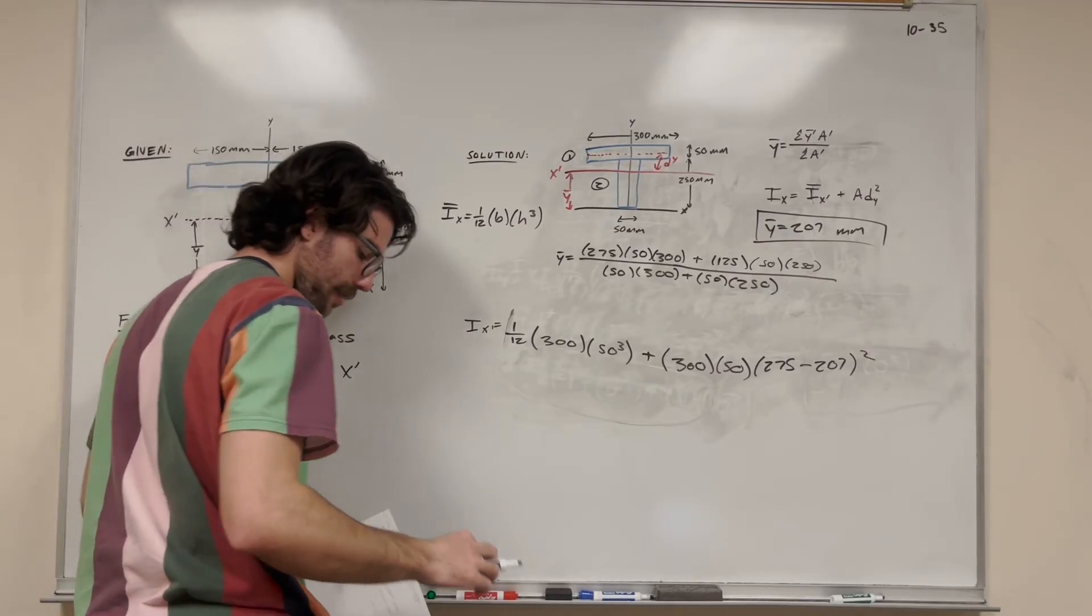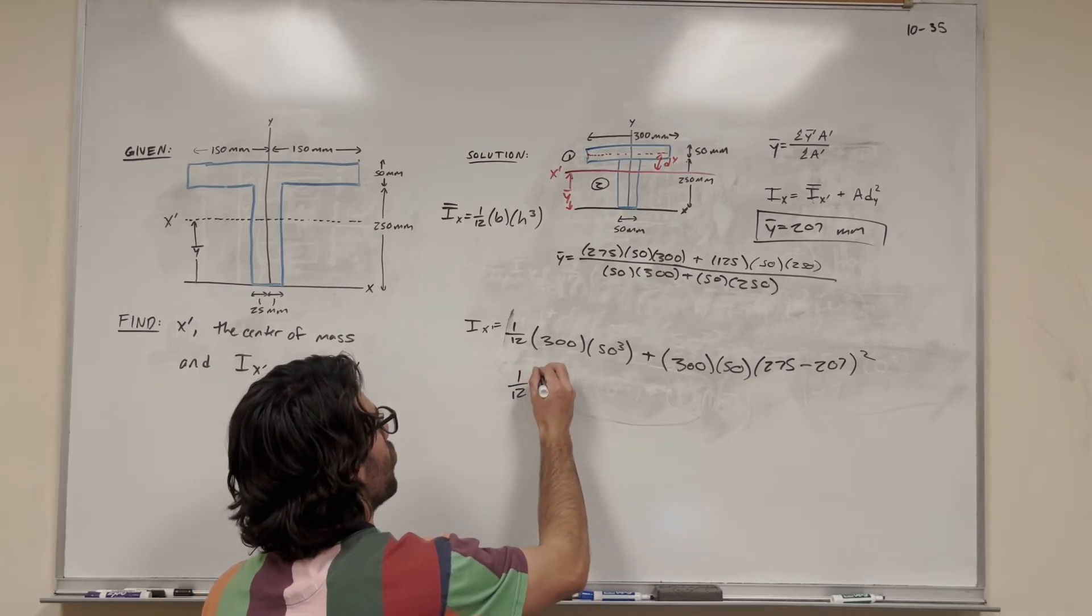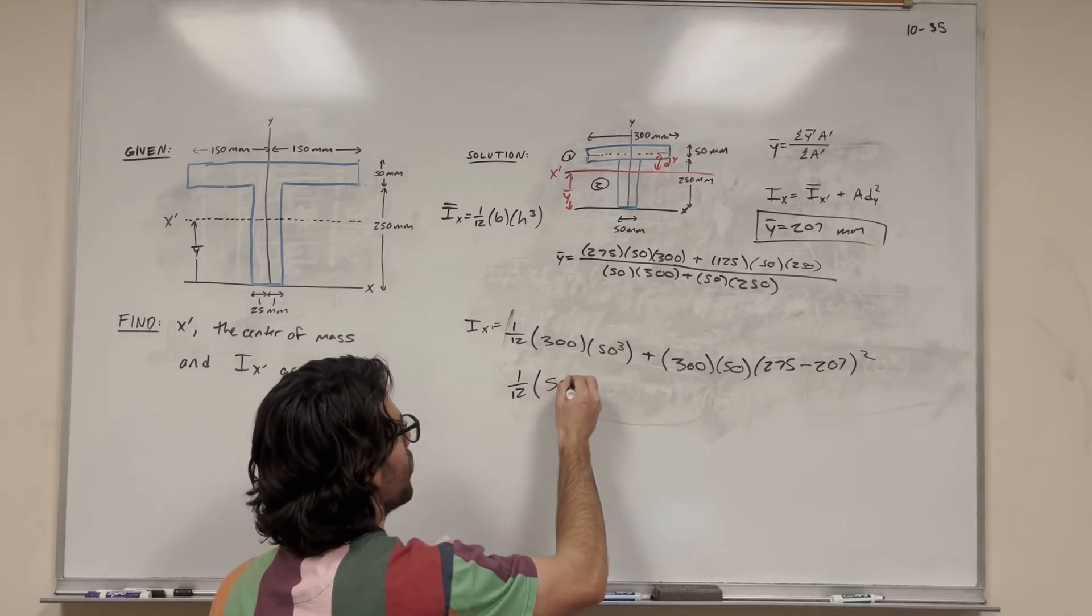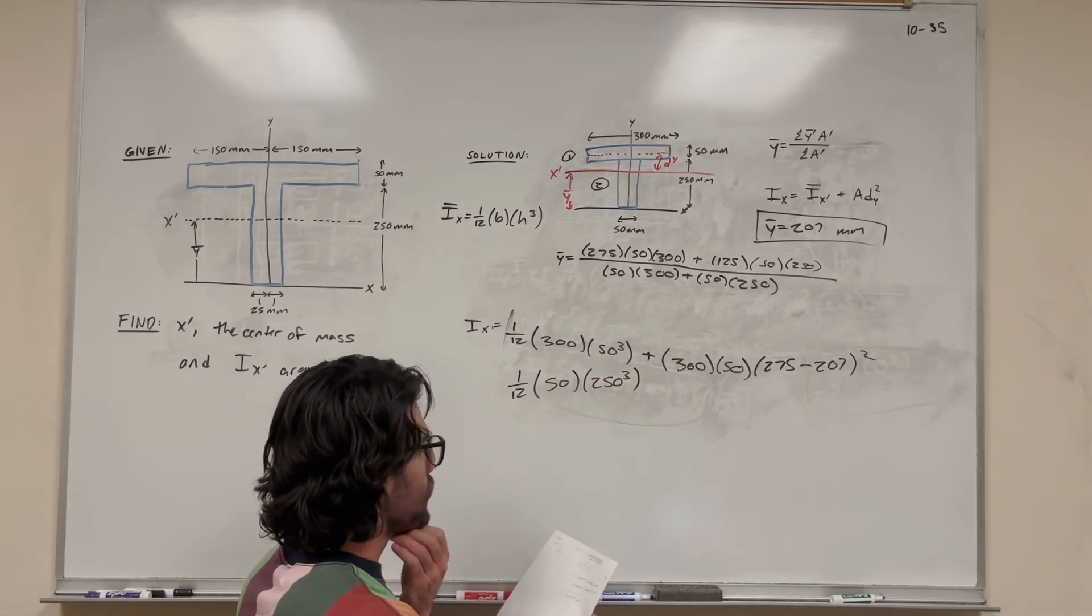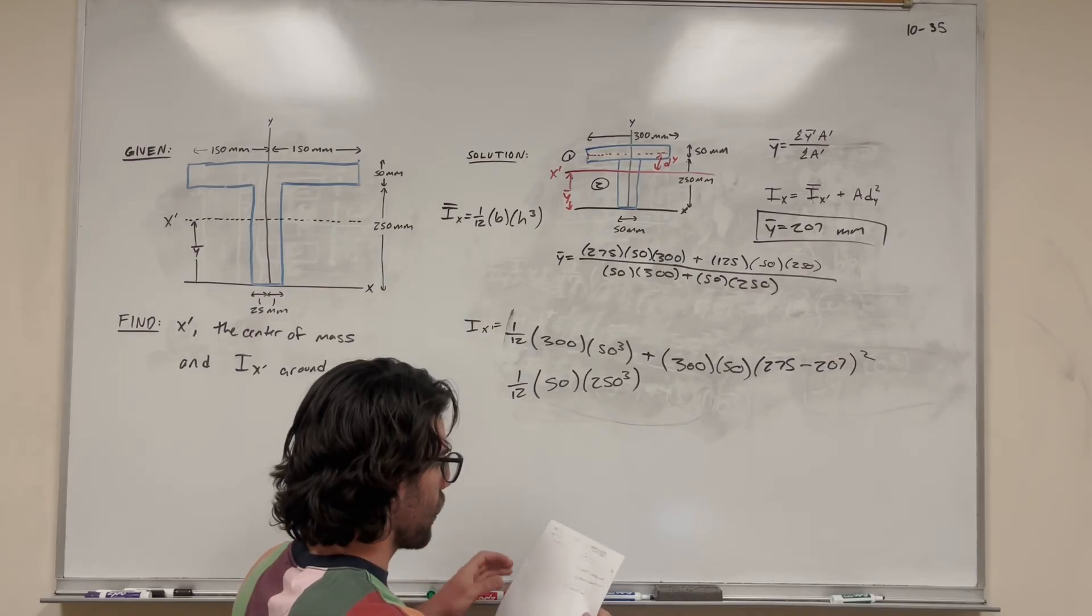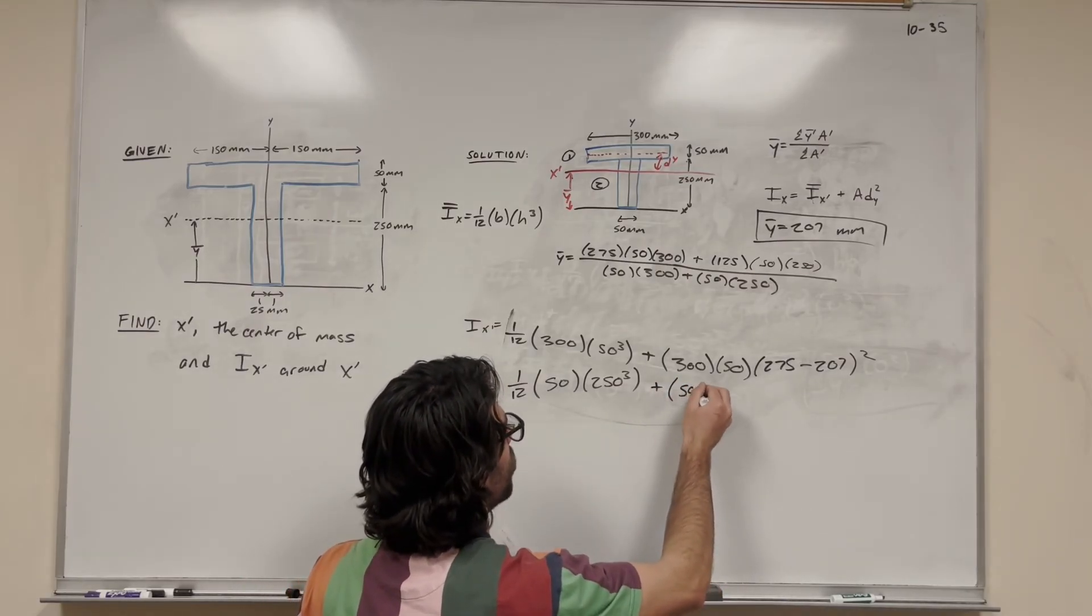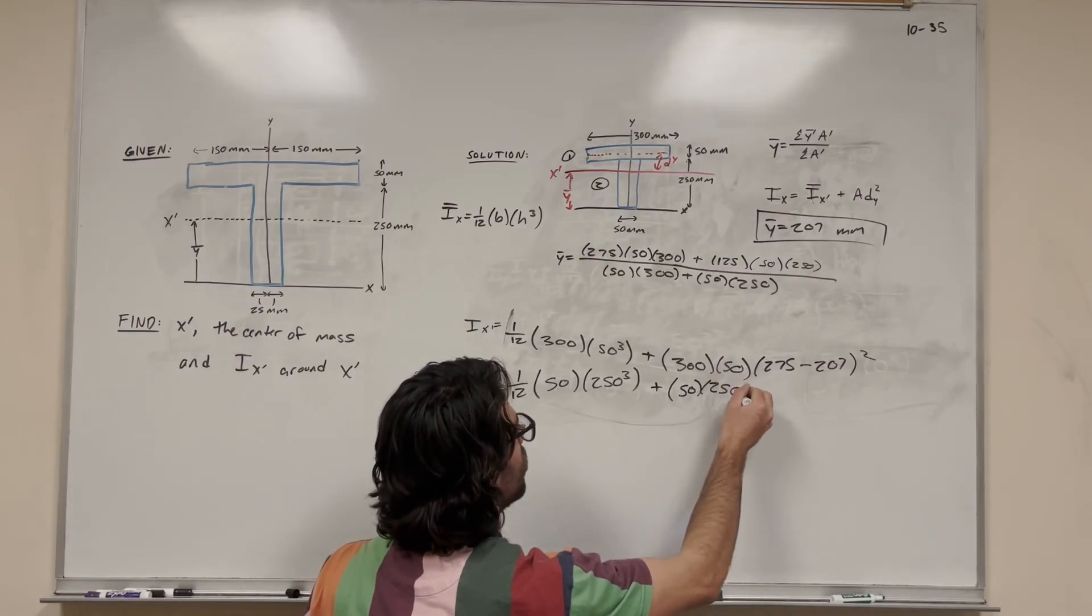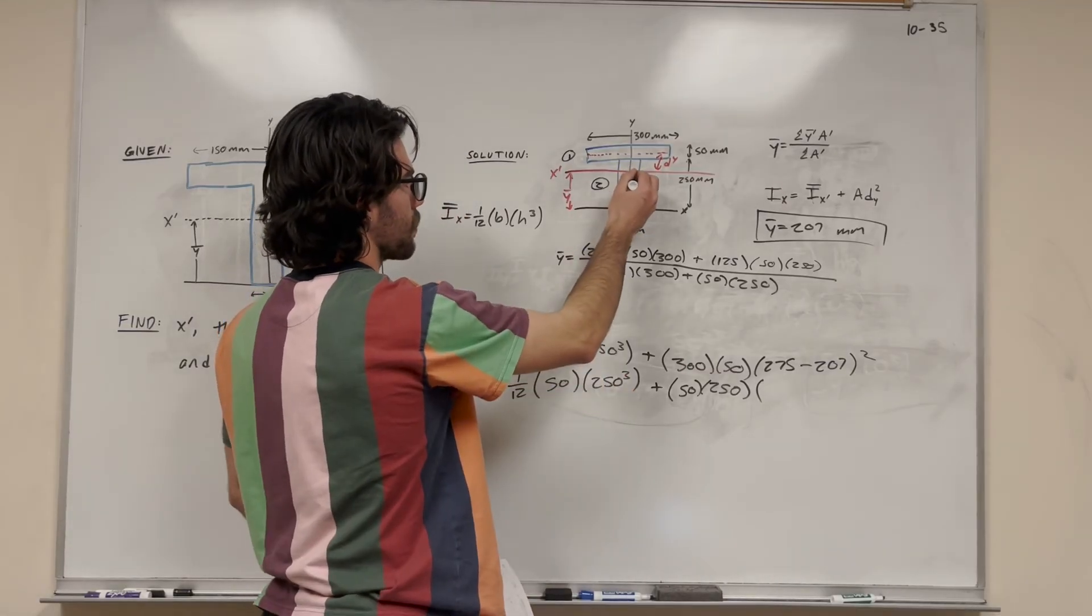Now let's do it for the second rectangle. So the second rectangle, we're going to do again, 1/12 base is 50 millimeters and height is 250 millimeters cubed. All right, then we're going to add it to the area. So the area is 50 times 250. And then now we're going to do the same thing, distance y squared.